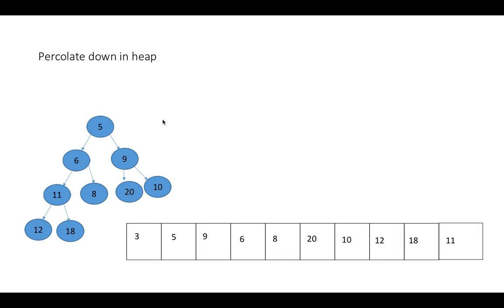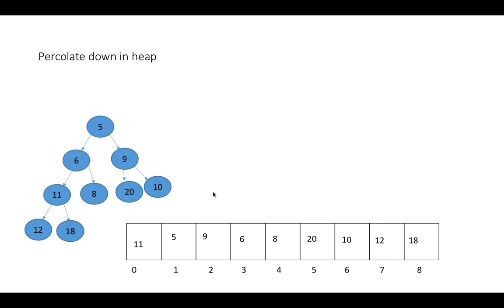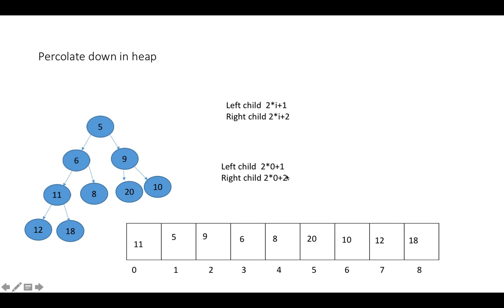Now let's understand this in the form of an array. This array satisfies the min heap property. We need to take out the root element at index 0, which is 3. We swap it with the last element, take it out, and print it. The array no longer satisfies the min heap property because 11 didn't get its right position. Using the formula 2i+1 for the left child and 2i+2 for the right child, for 11 at index 0 we get children at indices 1 and 2, which are 5 and 9. We compare them and swap 11 with the minimum, which is 5.